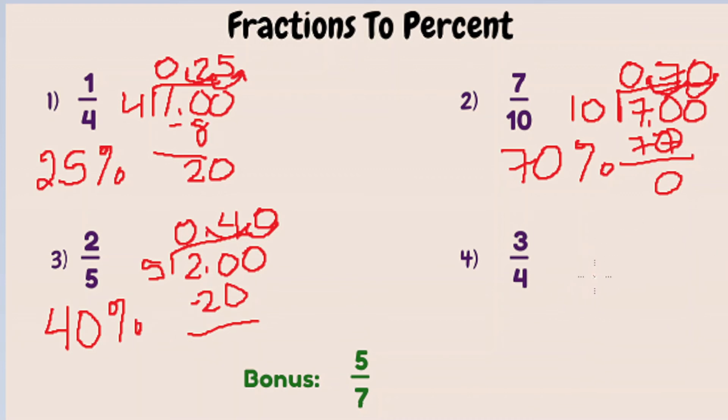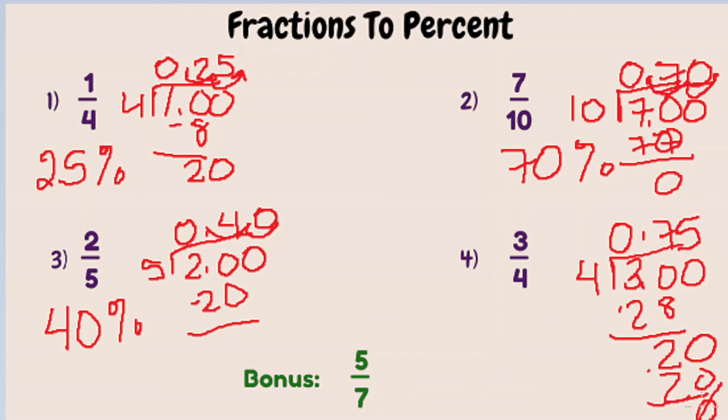Three-fourths, last one. Four goes into three zero times, but four goes into thirty seven times. Seven times four is twenty-eight, remainder of two. Add the next zero, and we get five. Four times five is twenty. We're going to move it two spots, one, two, and add our percent sign, seventy-five percent.